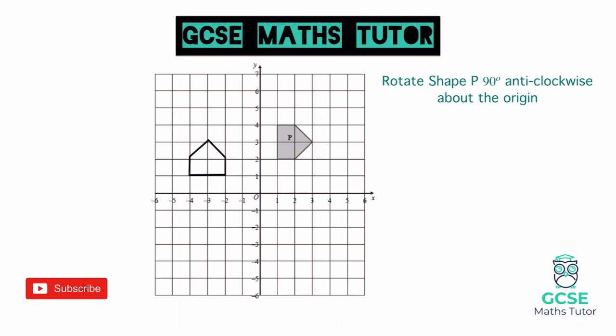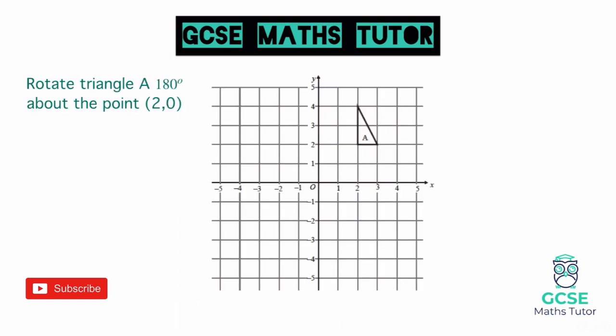This question says: rotate triangle A 180 degrees about the point 2, 0. You'll notice it doesn't give a direction — clockwise or anticlockwise — because when turning 180 degrees, you end up in the same position either way. So it's completely up to you which direction you go in, but the process is going to be the same.